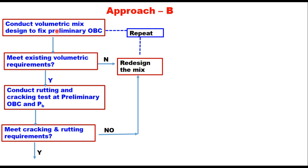Approach B is an expanded version of Approach A. It also starts with the current volumetric mix design method — Superpave, Marshall, or beam — to determine a preliminary optimum binder content that meets all existing volumetric requirements. The mix is then tested with selected rutting and cracking tests at the preliminary OBC and at two or more additional binder contents at intervals of plus or minus 0.3 to 0.5 percent of OBC. A binder content — not necessarily the lowest — that satisfies both rutting and cracking test criteria is selected as the final optimum binder content.